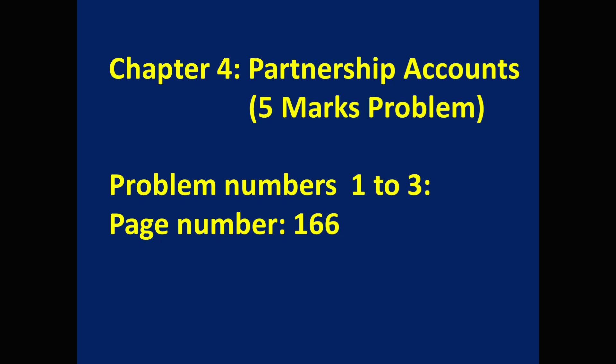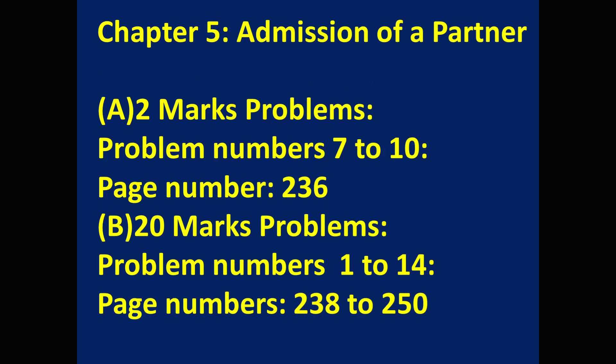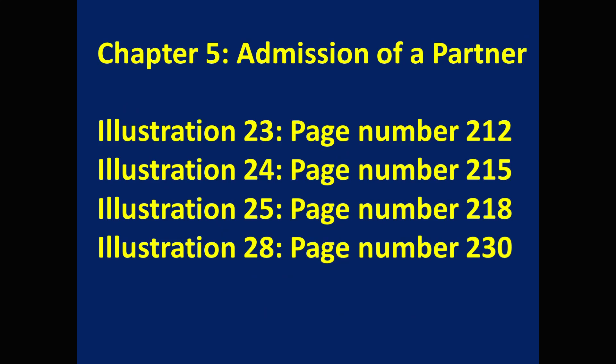Chapter 4: Partnership accounts. For 5 marks, expect one problem — problem numbers 1, 2, and 3, page 166. From the same topic for 5 marks, you can also expect Illustration 6, page 152. Chapter 5: Admission of a partner. For 2 marks, one problem comes — important problems are 7 to 10, page 236. For 20 marks, one problem comes — important problems are 1 to 14, so don't take any risk, learn all the problems; page numbers 238 to 250. Illustration problems: Illustration 23 page 212, 24 page 215, 25 page 218, 28 page 230.